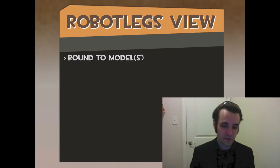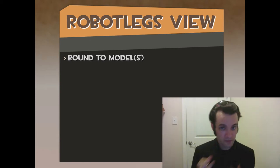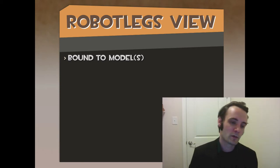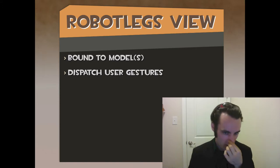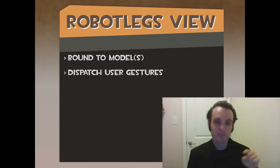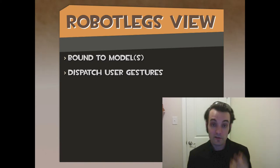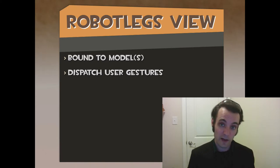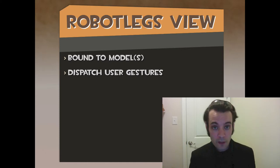In Robot Legs, a view is bound to a model or models. This is where the presenter can massage data, versus a simple mediator talking to a model — it's not always one-to-one, it could be multiple. It dispatches user gestures: when the view gets clicked, tapped, or swiped, the mediator responds to that, so the view has to dispatch that via a local event.